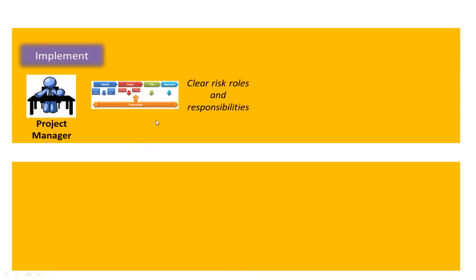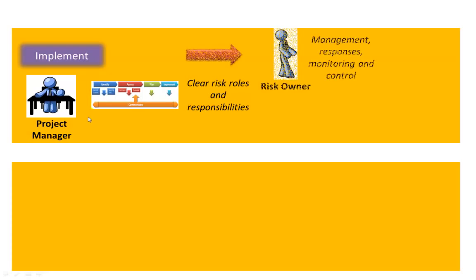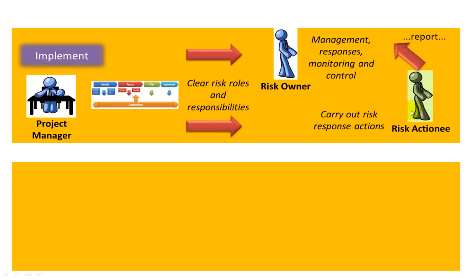The next step is implement, and this is where you need clear risk roles and responsibilities. In effect you are building your risk responses into the various plans and, as project manager, making sure they are happening and that risks are being appropriately managed. The risk owner — which may be the project manager or even members of the project board — is responsible for managing the responses, monitoring their effectiveness and controlling by taking action to ensure responses have the appropriate effect. The risk owner may delegate actions to a role called the risk actionee, who carries out the appropriate response actions and reports back to the risk owner.